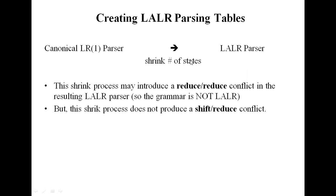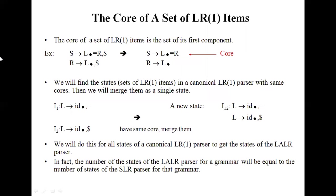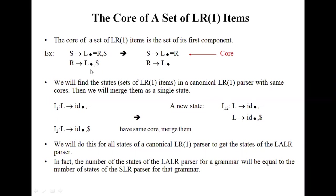Suppose this is one LR item of any core set of the LR1 items of the first set. S produces L dot equal R, dollar. And R produces L dot, dollar. So these are the core parts.